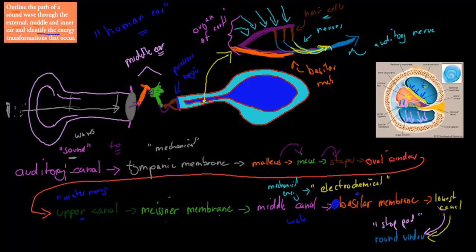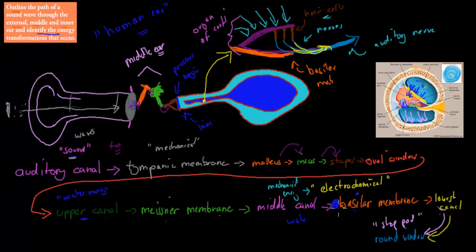So to quickly go over it again: air enters through the auditory canal and hits the tympanic membrane — this is where sound energy is transformed into mechanical energy. The mechanical energy activates the malleus, then the malleus activates the incus, the incus activates the stapes — all part of the middle ear. The stapes pushes against the oval window, which is part of the inner ear. The oval window starts the pressure wave through the cochlea — up through the upper canal, into the Reissner membrane, which makes water in the middle canal move. The middle canal pushes against the basilar membrane, which helps the organ of Corti push the hair cells down. This is where we have a change from mechanical to electrochemical energy, sending a signal via the auditory nerve to the brain, where sound is interpreted.